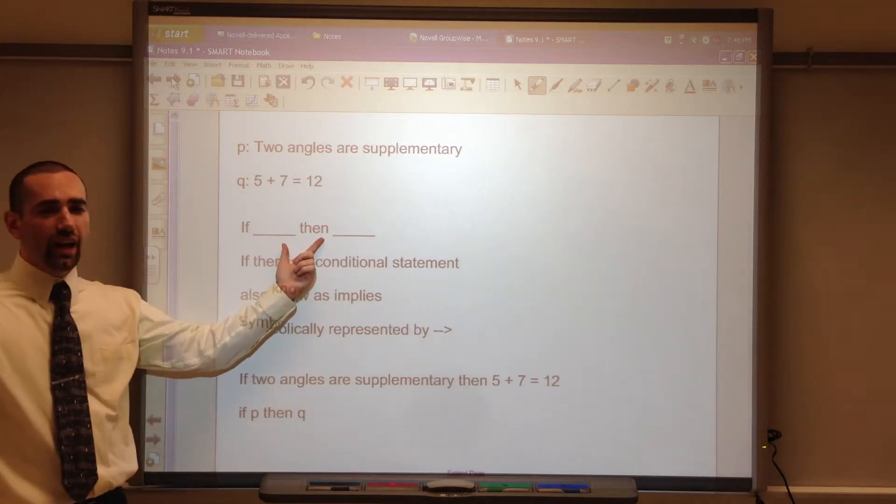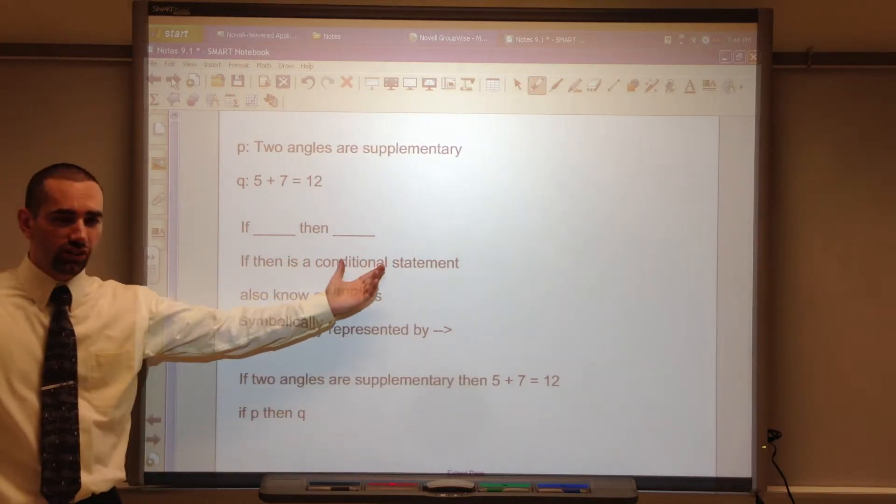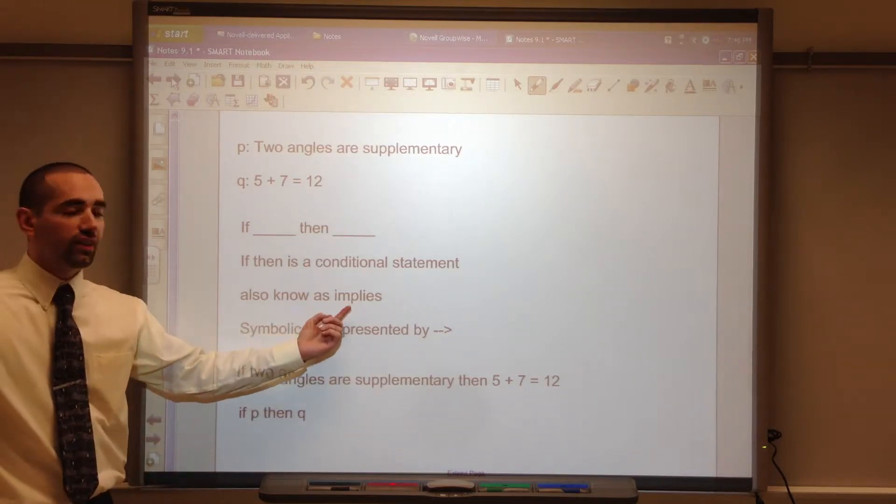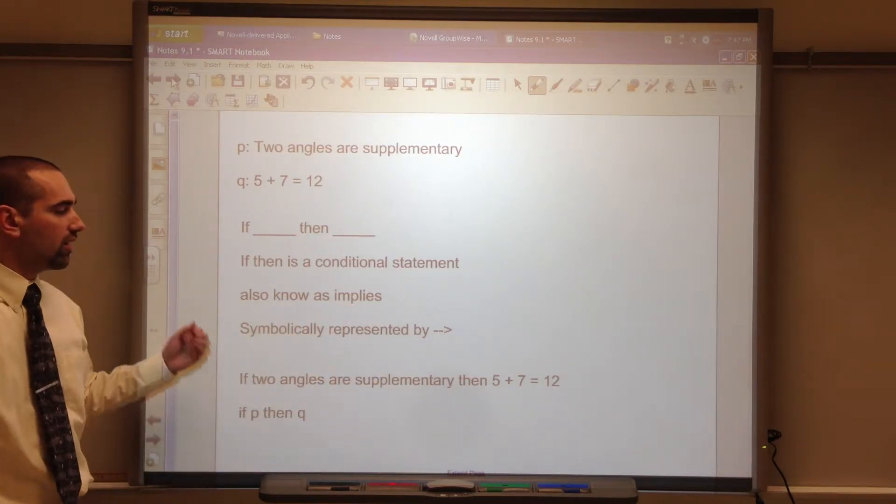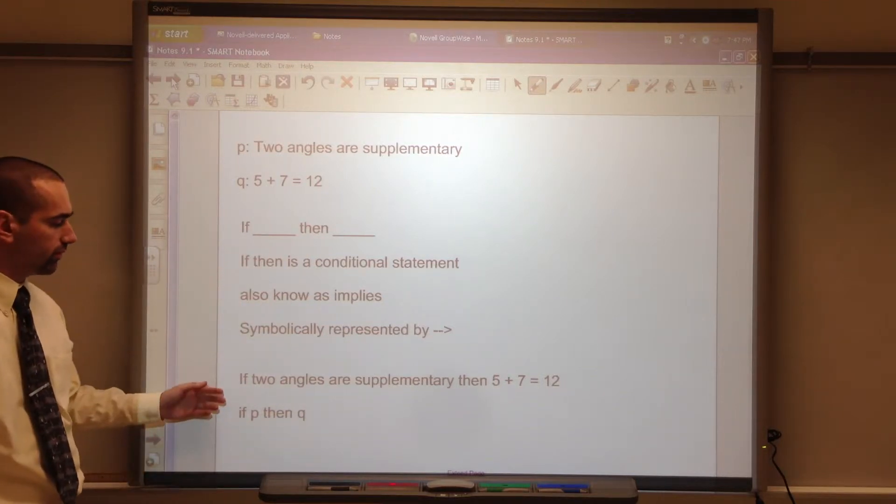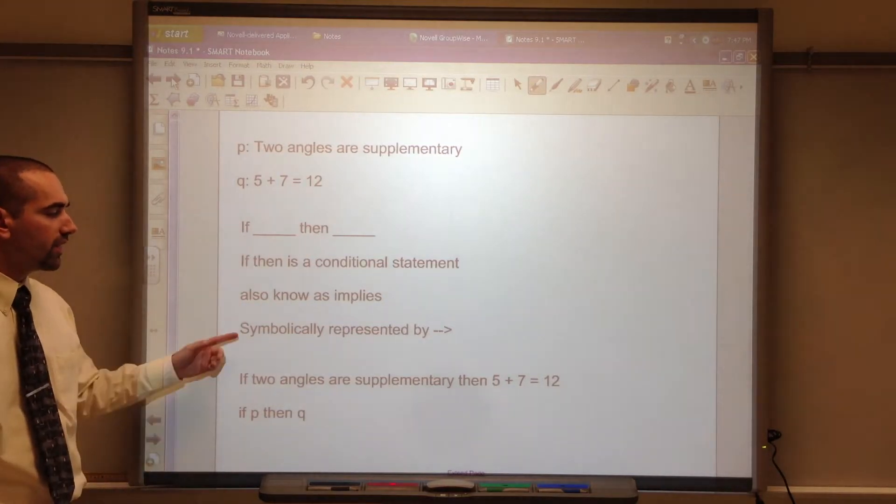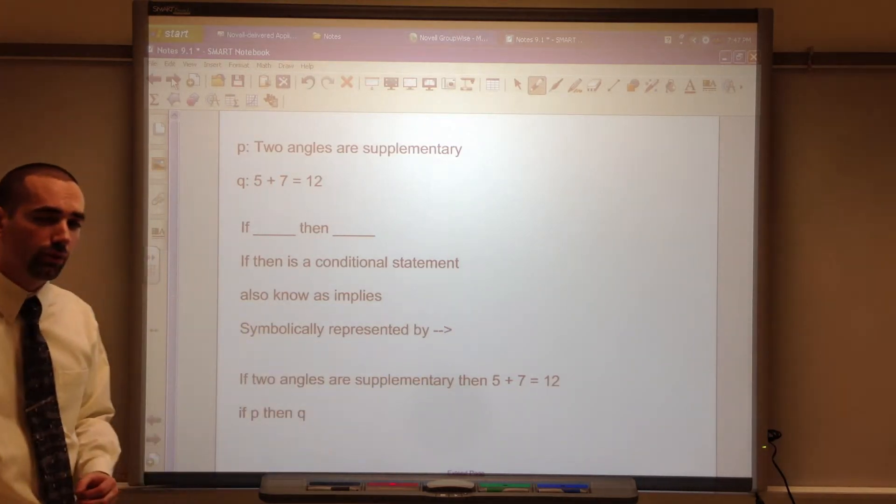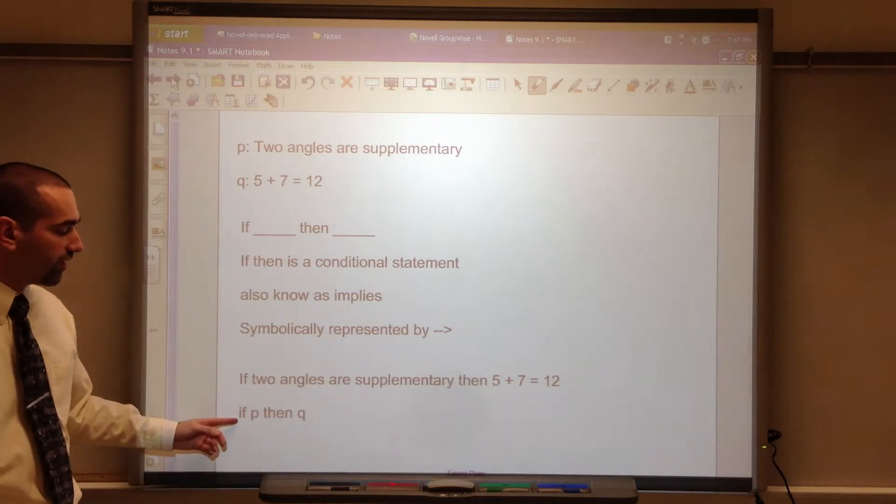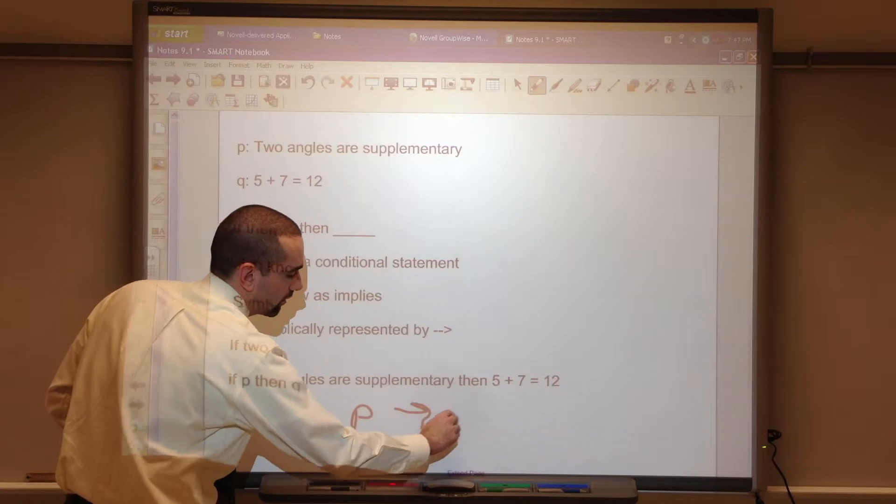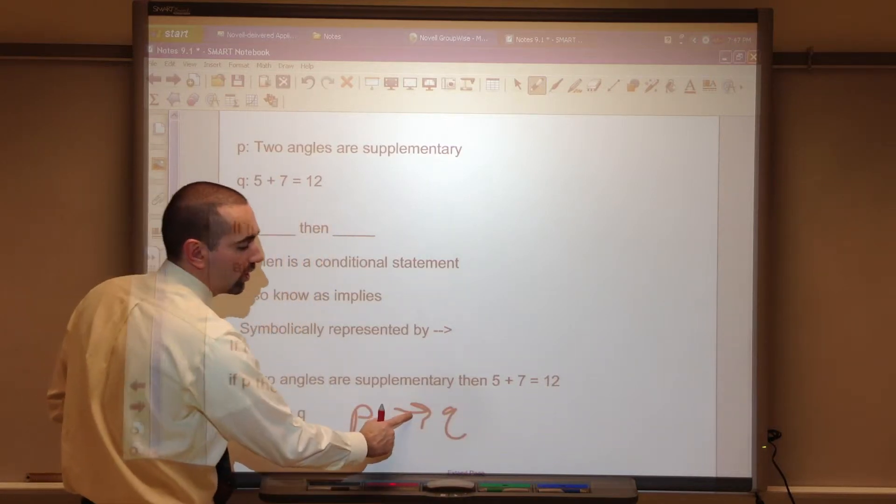IF THEN. IF THEN is a conditional statement. IF THIS THEN THAT. Also known as implies. P implies Q. There's one way to say it. It's representing the arrow. If two angles are supplementary, then five plus seven equals twelve. IF P THEN Q. P arrow Q. P implies Q.